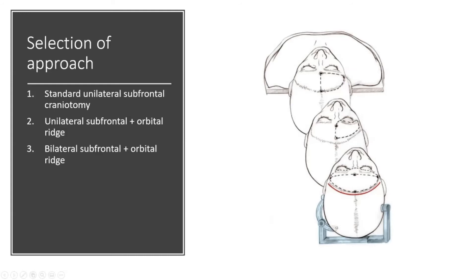If the lesion extends bilaterally — for example, a large meningioma or a tumor originating from the lamina cribrosa extending mostly bilaterally — I do a bilateral extension of the subfrontal approach. I usually don't place a burr hole on top of the sinus, though it is shown here; that is just my personal preference. I try both ways to make sure I don't have bleeding trouble from the sagittal sinus, managing this carefully on both sides.